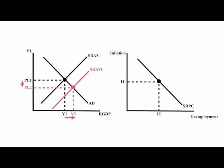When we shift the aggregate supply curve to the right, price levels go down and real GDP increases. This brings inflation and unemployment down, which shifts the short-run Phillips curve to the left.